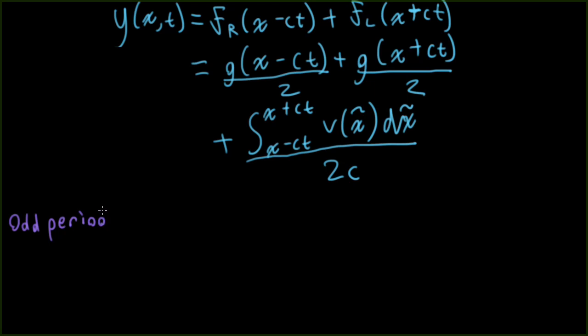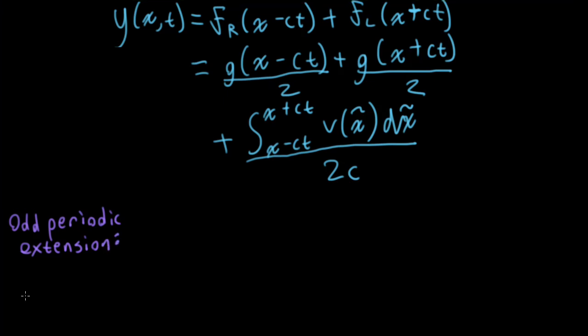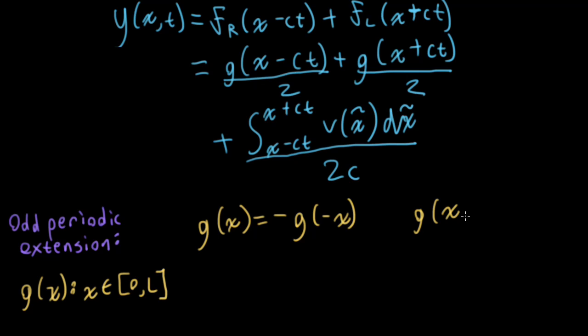The idea is we can create what's called an odd periodic extension. So the general idea here is that we have a g of x, and this is defined for x in a range going from 0 to L. And we want to make up some values for it outside of that range. So let's let g of x equal minus g of minus x. So this is the odd part of the extension.